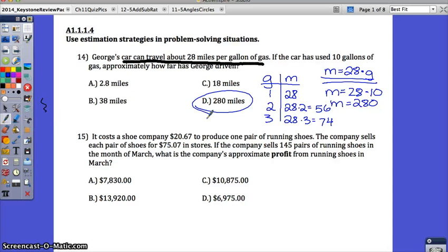Let's look at 15. It costs a shoe company $20.67 to produce one pair of running shoes. The company sells each pair of shoes for $75.07 in stores. If the company sells 145 pairs of running shoes in the month of March, what is the company's approximate profit, and this is an important word, profit, from running shoes in March? Even though they sell the shoes for $75.07, that is not all profit because they have to pay for the cost of making these running shoes.